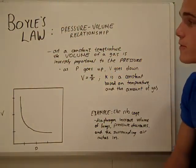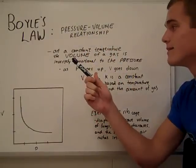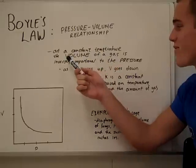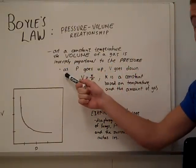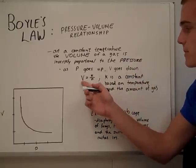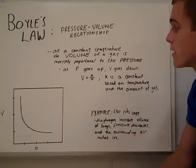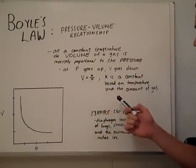Boyle's law. The first law. It is a pressure and volume relationship. It states, at a constant temperature, the volume of a gas is inversely proportional to the pressure. This means as P goes up, V goes down. It's expressed by this equation: V equals K over P, where K is a constant based on temperature and the amount of gas.